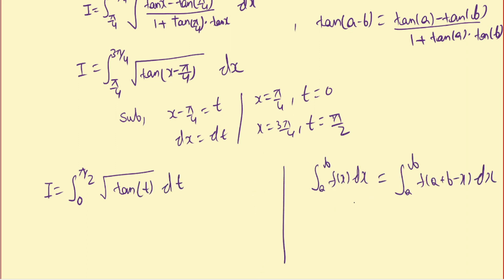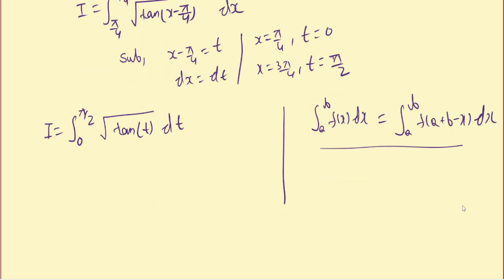I'm going to use the definite integral property — people also call it King's Rule, I don't know why. Using it, we get I = ∫ from 0 to π/2 of √(cot t) dt. This is our second equation.